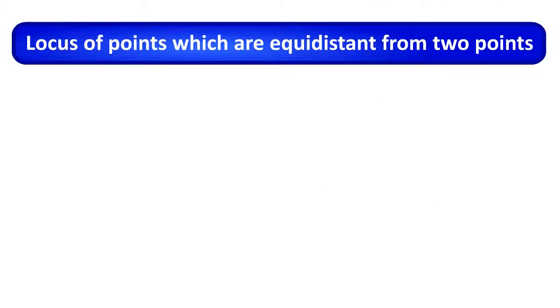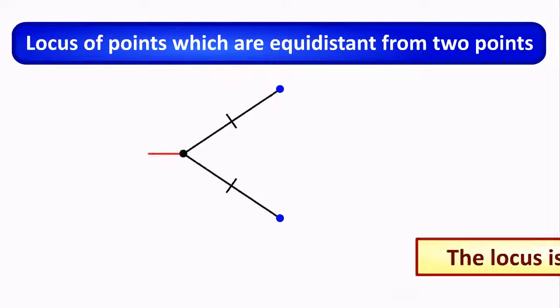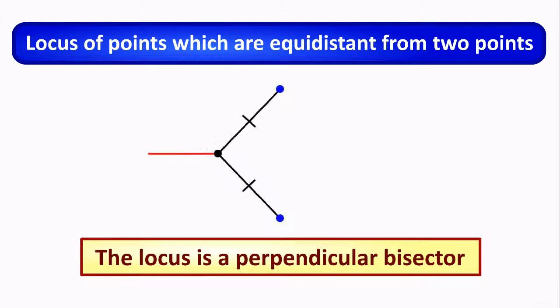The locus of points which are equidistant from two points is a perpendicular bisector.